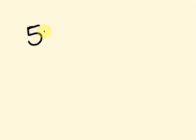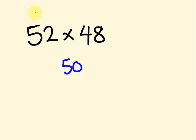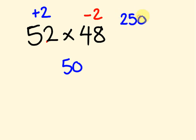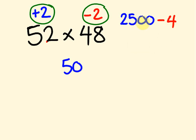Here's a different type of example: 52 times 48. Using base 50, this is 2 more than 50, but 48 is 2 less than 50 — I've written it in a different color. So 52 take 2 or 48 plus 2 gives 50. Times by 100 is 5,000. Divide by 2 gives 2,500. Now multiplying a positive 2 and a negative 2 gives minus 4 — so we subtract 4, giving the answer 2,496.